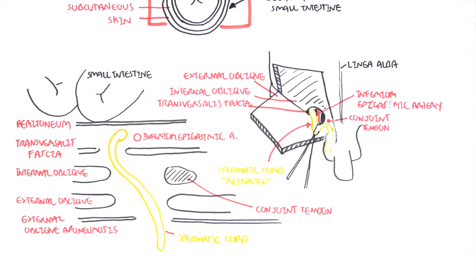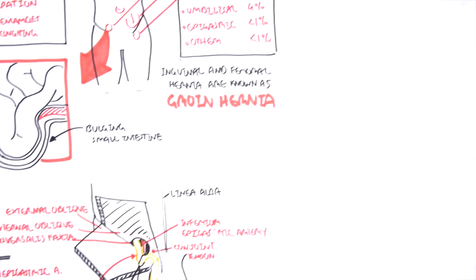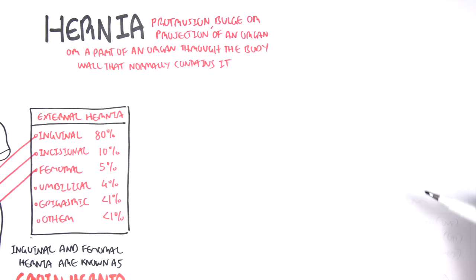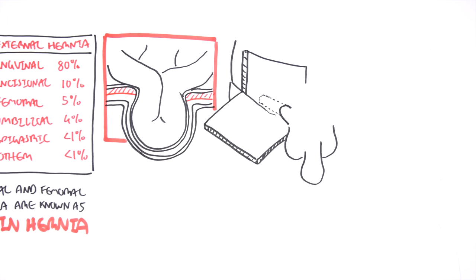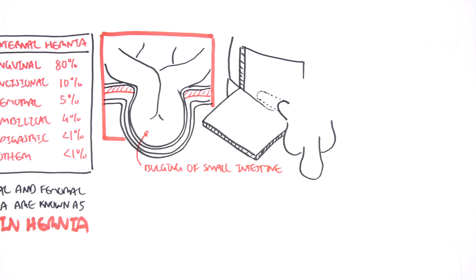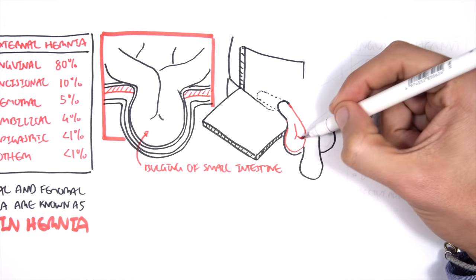Now let's talk about inguinal hernia specifically. What we see is the intestines bulging through the abdominal wall. There are two types of inguinal hernia: indirect and direct. An indirect inguinal hernia pushes through the abdominal wall and actually goes into the scrotum, following the spermatic cord pathway. A direct inguinal hernia bulges through the abdominal wall but does not go down to the scrotum.